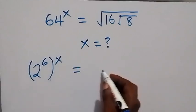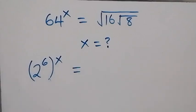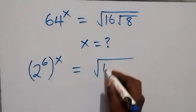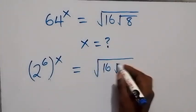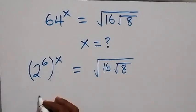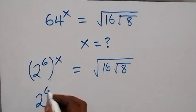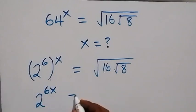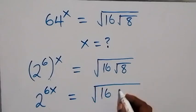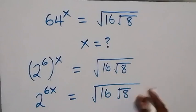So on the right side we still have square root of 16 times square root of 8. From here, let us raise both sides to power 2. This gives us 2 raised to power 6x equals square root of 16 times square root of 8.